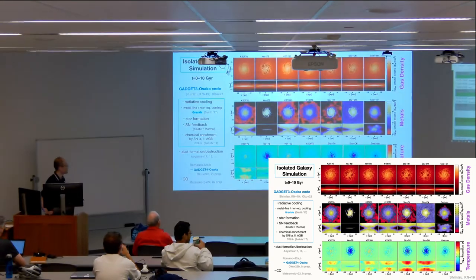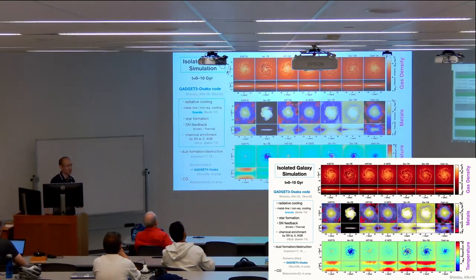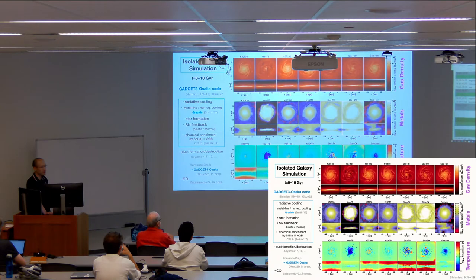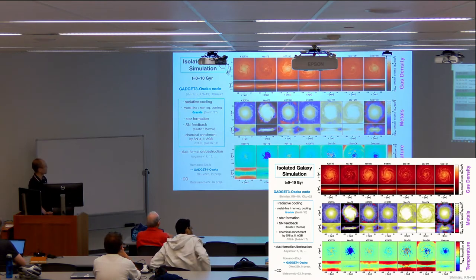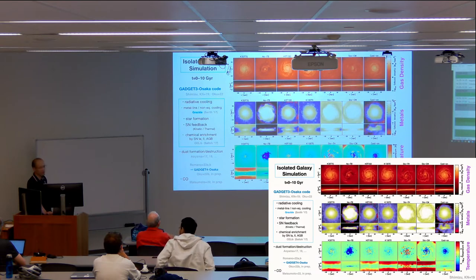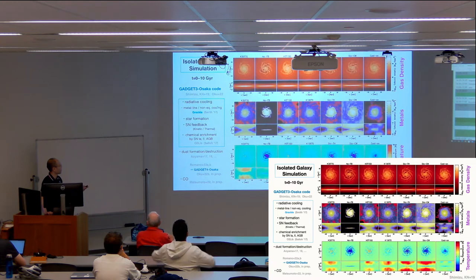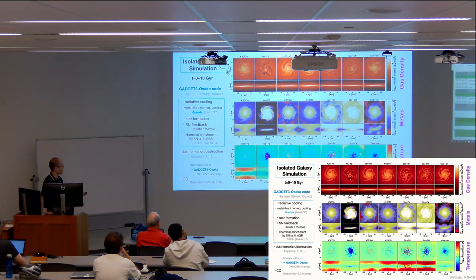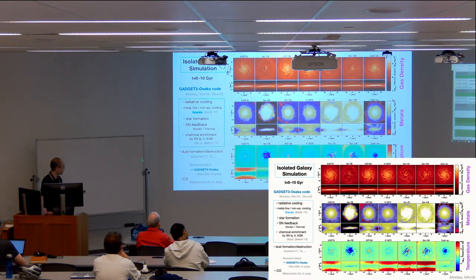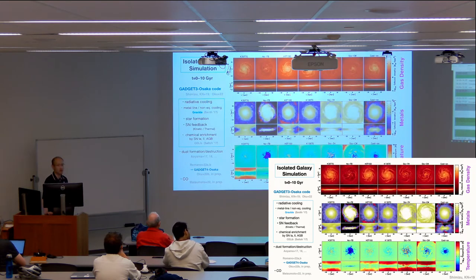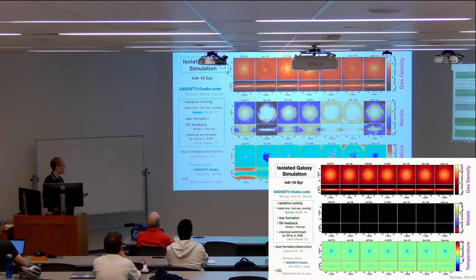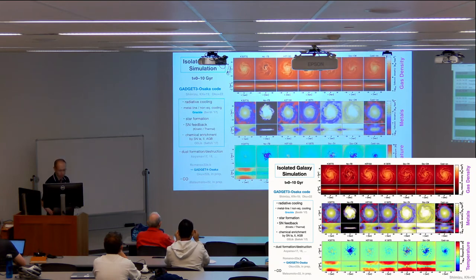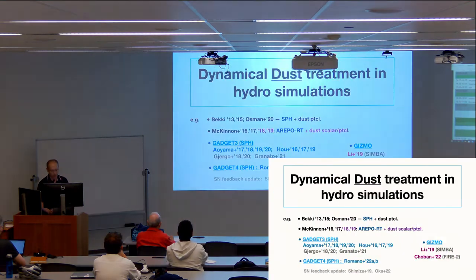My group is participating in this collaboration using gadget 3 code. Here's an example similar to the one we talked about already, but it's an isolated galaxy run by our code, summarizing Shimizu's 19 paper and also more recently Yuri's 22 paper. We have all the standard physical recipes such as cooling by Grackle, star formation, feedback, and then the chemical enrichment using the chemical evolution library by SAITOH called CELLIB. Today I'll talk about this further addition as an application, about dust formation and destruction coming from this series of papers by Aoyama and others.